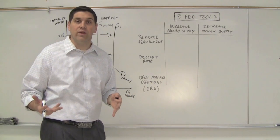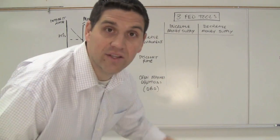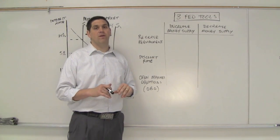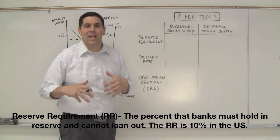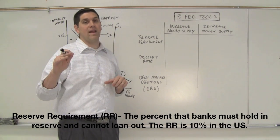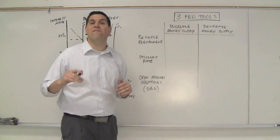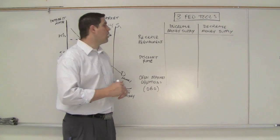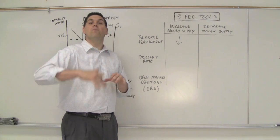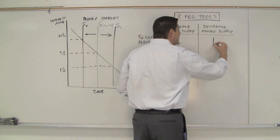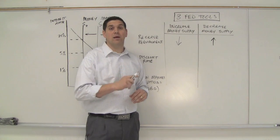How does the Fed actually do this? The answer is the three Fed tools — the three things the Fed can do to adjust the money supply. The first is the reserve requirement: how much banks have to hold in reserve. If you put $1,000 in the bank, the bank doesn't keep all $1,000 in the vault — it keeps some and loans the rest out. To increase the money supply, the Fed decreases the reserve requirement so more money gets loaned out. To decrease the money supply, they increase the reserve requirement.